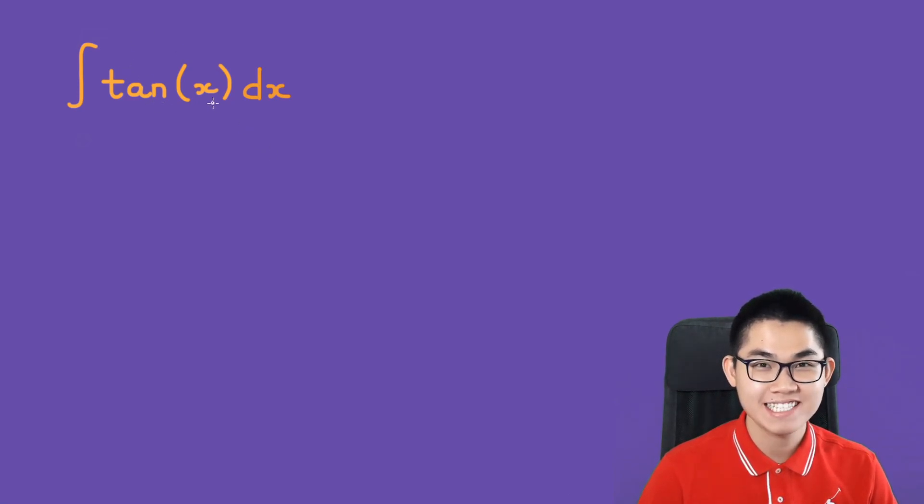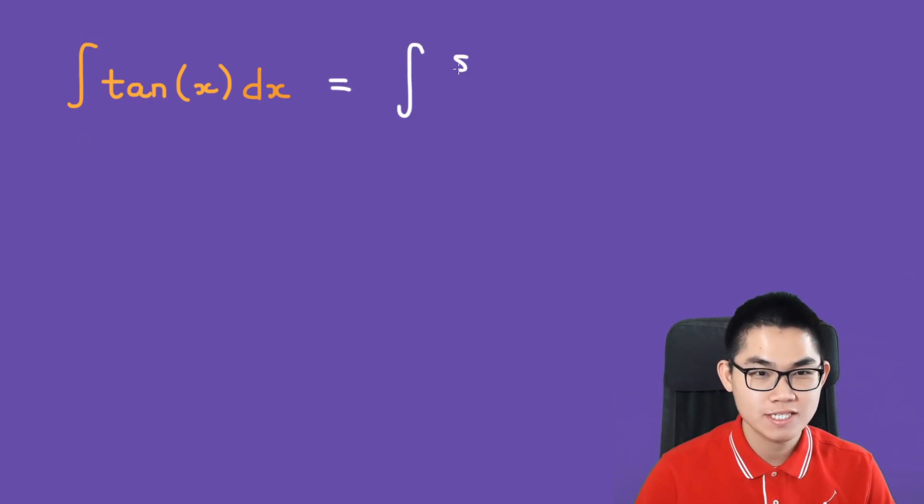The integral of tan of x dx. This can be solved with u substitution. The first step is to convert this into sine of x over cosine of x, because tan of x equals sine of x over cosine of x.